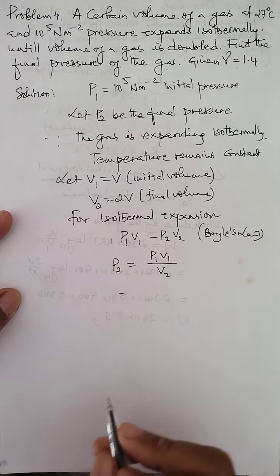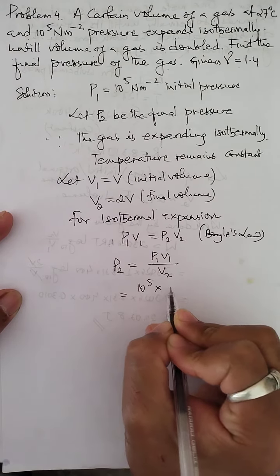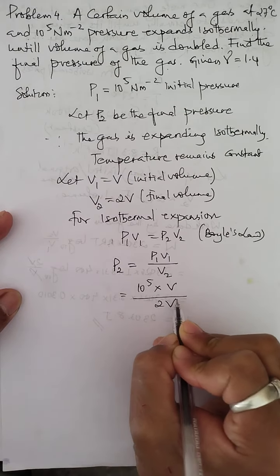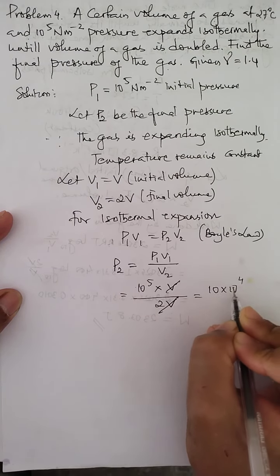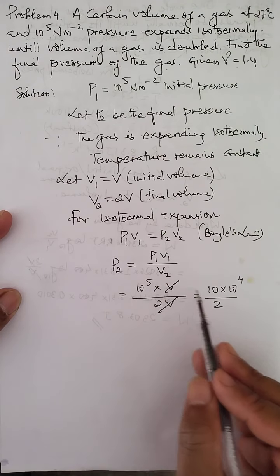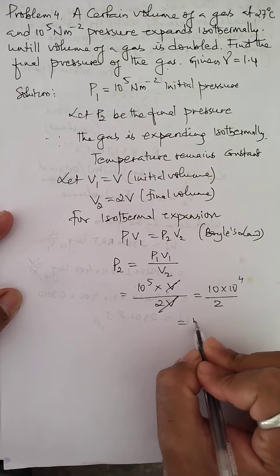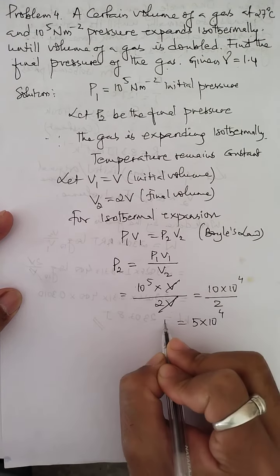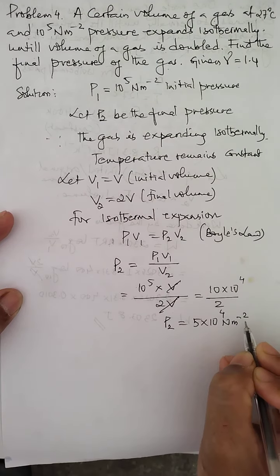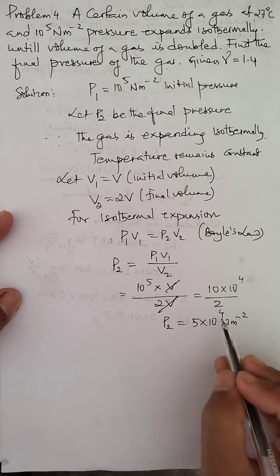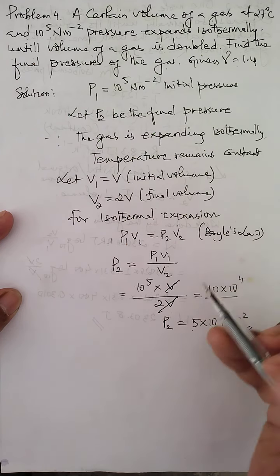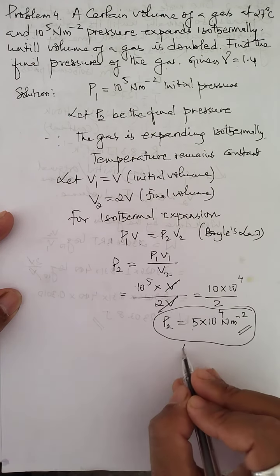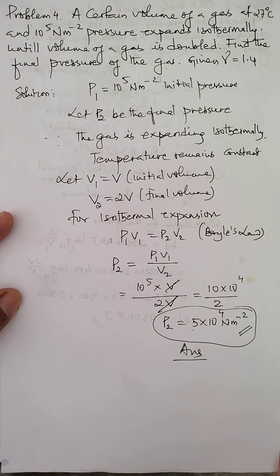Substituting values: P1 = 10^5 N/m², V1 = V, V2 = 2V. So P2 = 10^5 × V / 2V = 10^5 / 2 = 5 × 10^4 N/m². The final pressure is 5 × 10^4 newton per meter square, which is less than the initial pressure — consistent with the fact that when volume increases, pressure decreases.